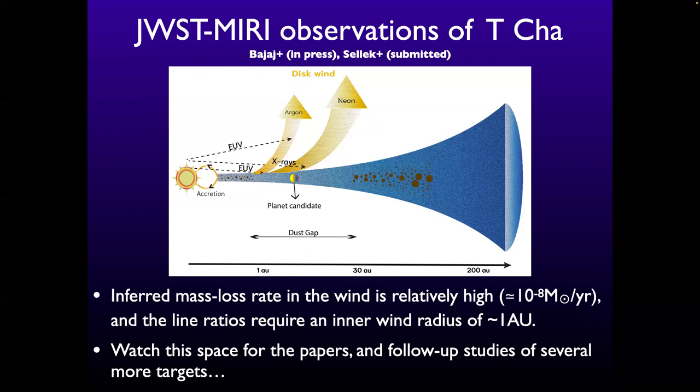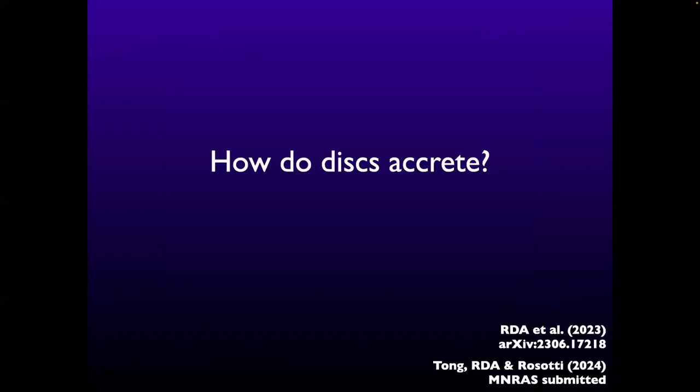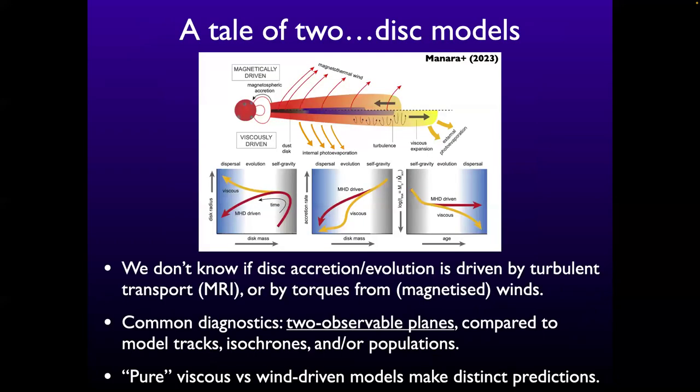That's the winds part — how are disks losing mass? The next question is: why do disks accrete? We either have magnetically-driven accretion or turbulent accretion, and in reality probably both — turbulence where the disk is hotter, magnetically-driven accretion where it's colder.